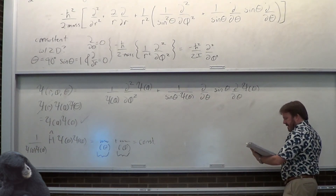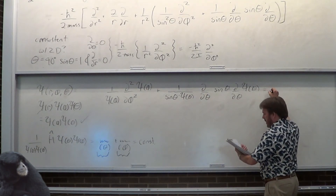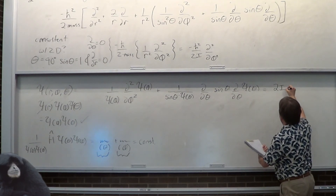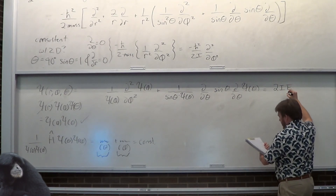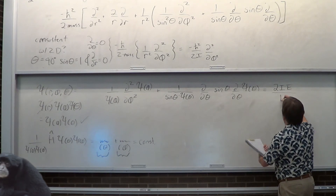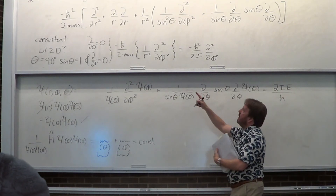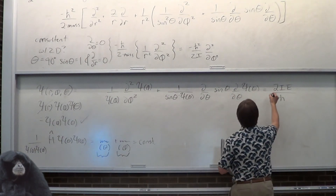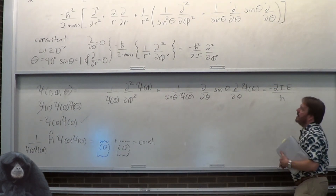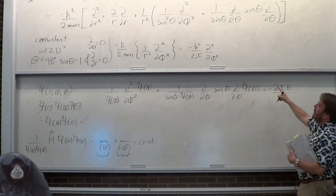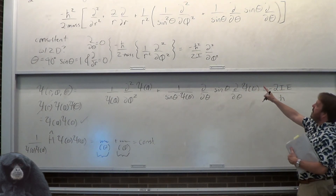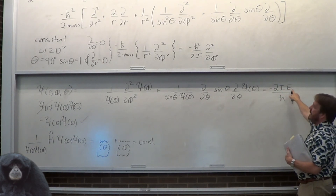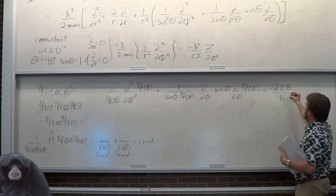These are going to be equal. I've moved the 2I·E/ℏ² constants over to the right side — took 2·mass·R² (which is I), times E, over ℏ squared — and I think there's a minus sign.